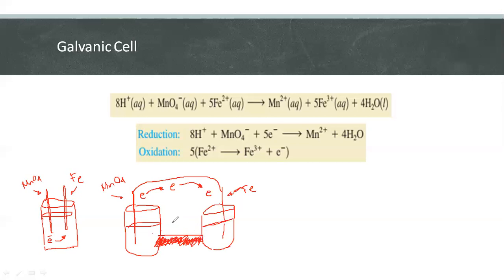By connecting them, the ions now can flow. This connection might involve a salt bridge or a porous disk.